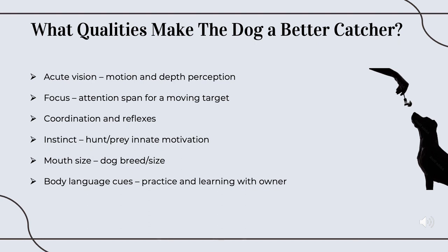The fifth one is going to be mouth size. It's definitely going to be easier for a bigger dog to catch a food item or any item than a smaller dog. And the last one is going to be body language and cues. Learning and practicing with the owner is going to be very important for a pet. A newly adopted puppy is going to have a harder time catching and learning from the body language cues from the owner than maybe a three or four-year-old that has been with the owner for a while.